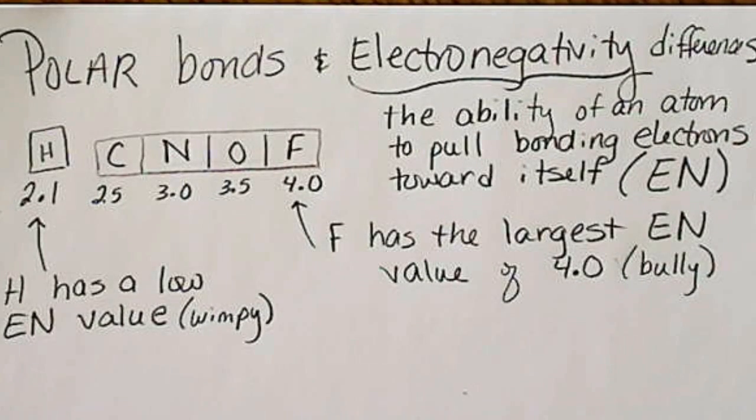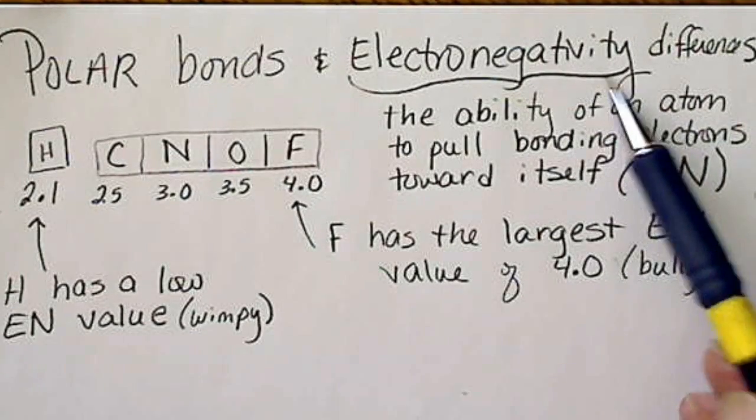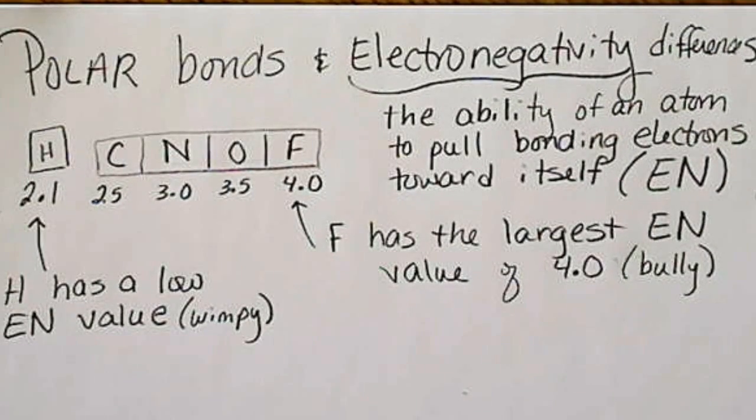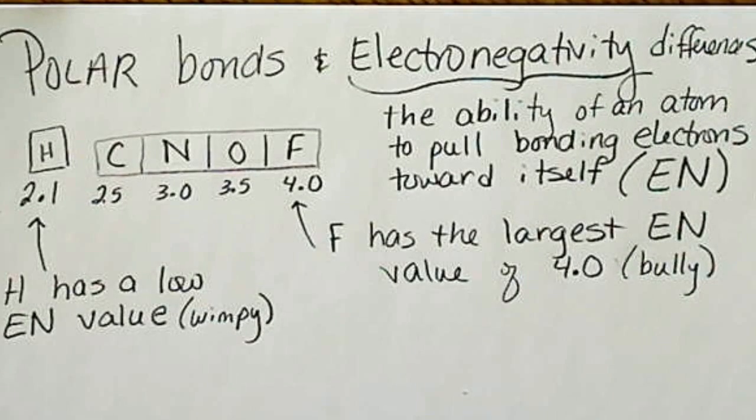When atoms are bonded together to form molecules and the sharing of electrons occurs, we're going to see that because of the electronegativity value that's assigned to an atom, not all atoms share their electrons equally. So electronegativity is just defined as the ability of an atom to pull bonding electrons toward itself.